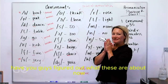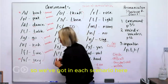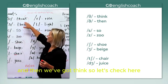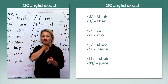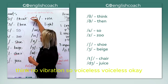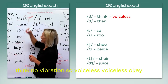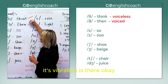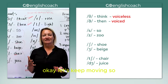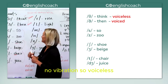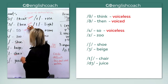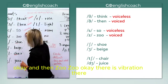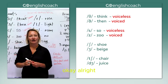Have you guys figured out what these are about now? In each scenario, we've got the voiceless and the voiced. This one is voiced. And then we've got 'think' — no vibration, so voiceless. And then we've got the word 'then' — that one has voice; the vibration is there. And then no vibration, so voiceless. And then 'zoo' — there is vibration there.